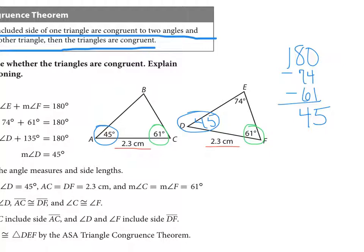I can also see that these two sides are congruent. And I can see that this angle is congruent to this angle. So what I have here is angle, side, angle. And because I have that pattern, I know that these two triangles are congruent.